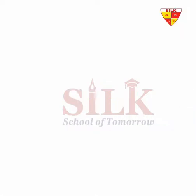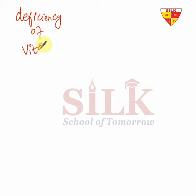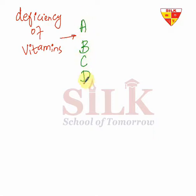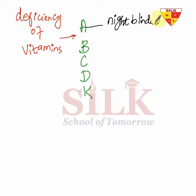Dear students, in the last lecture we talked about deficiency diseases. We talked about deficiency of vitamins. We learned about vitamin A, vitamin B, vitamin C, vitamin D and vitamin K. We learned about deficiency of vitamin A — night blindness is a disease, inability to see in dim light.